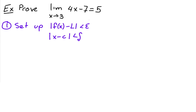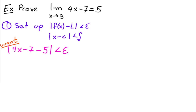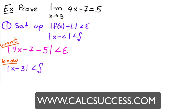So we want 4x minus 7 minus L, which is minus 5, to be less than epsilon. That's what we want. And we know that x minus c, or x minus 3, is less than delta.